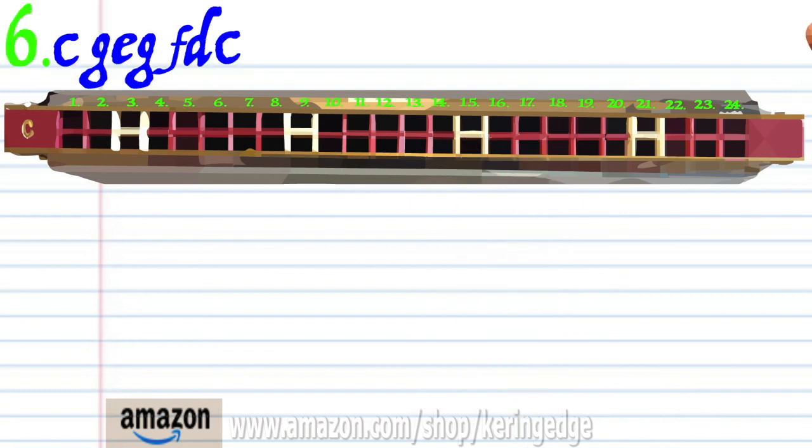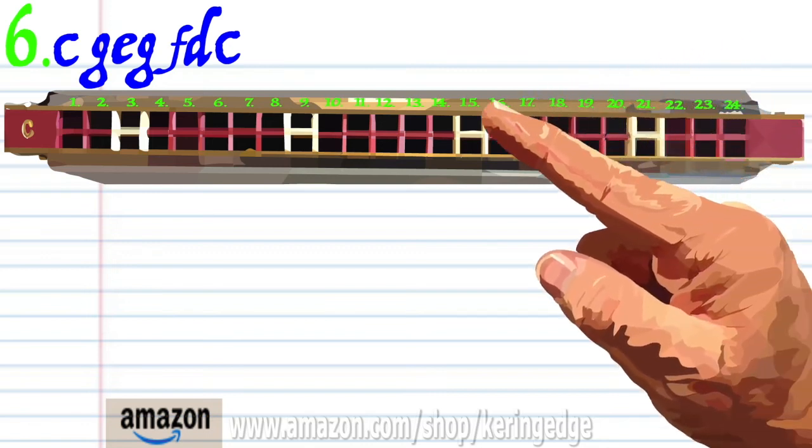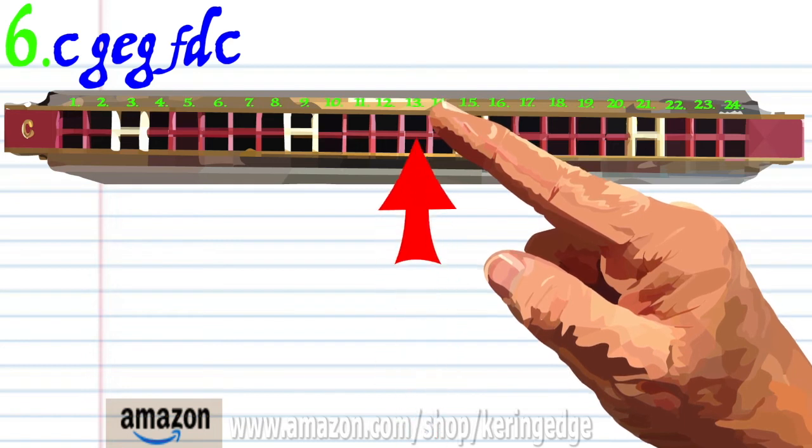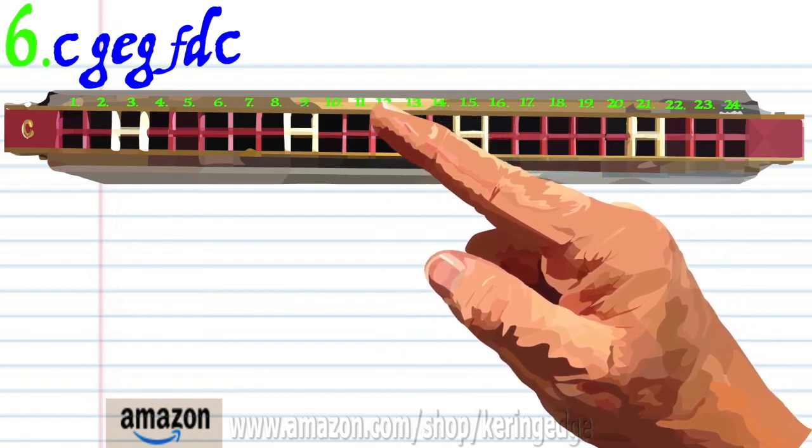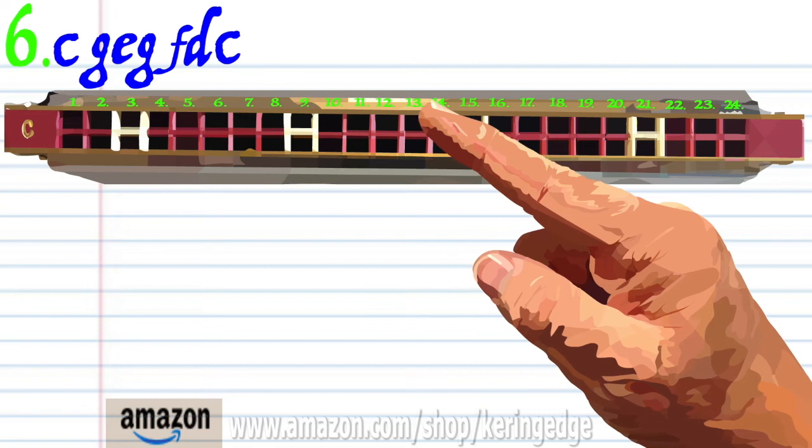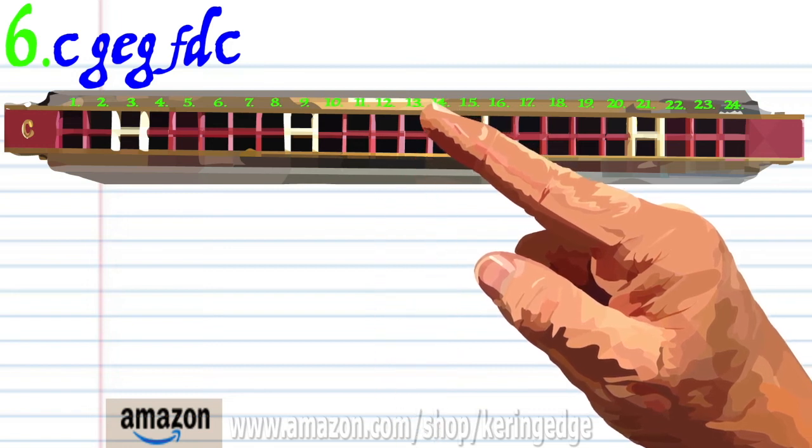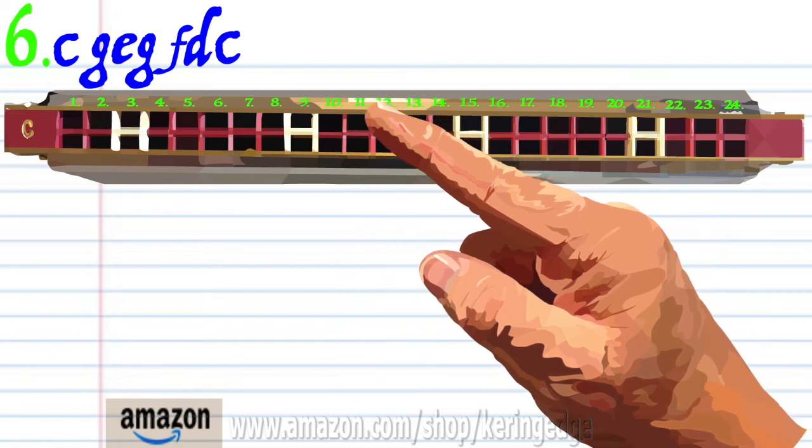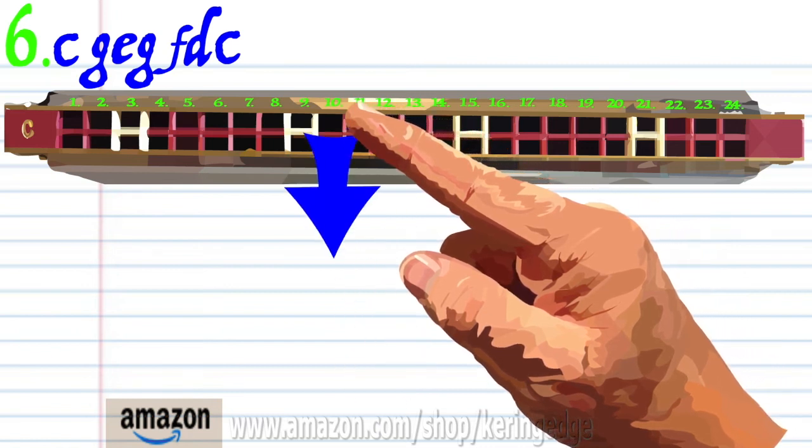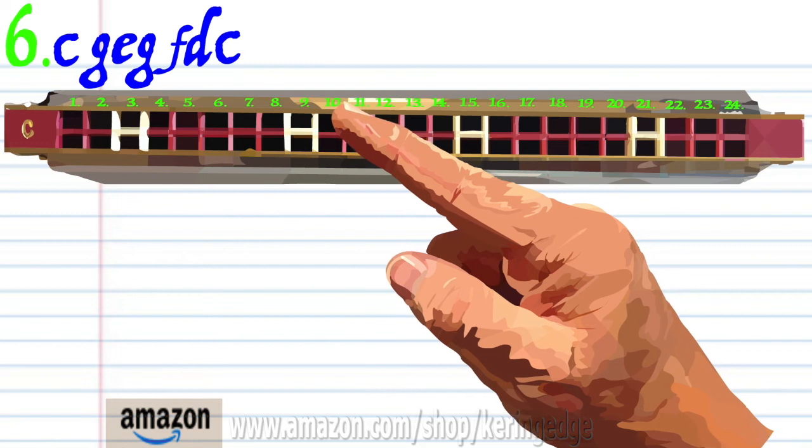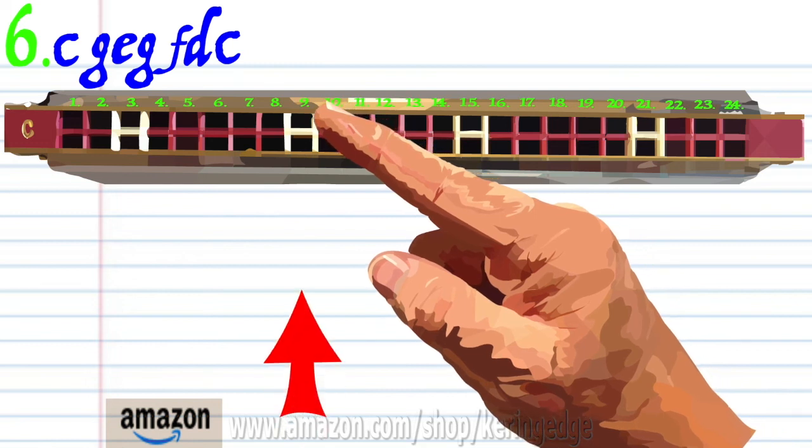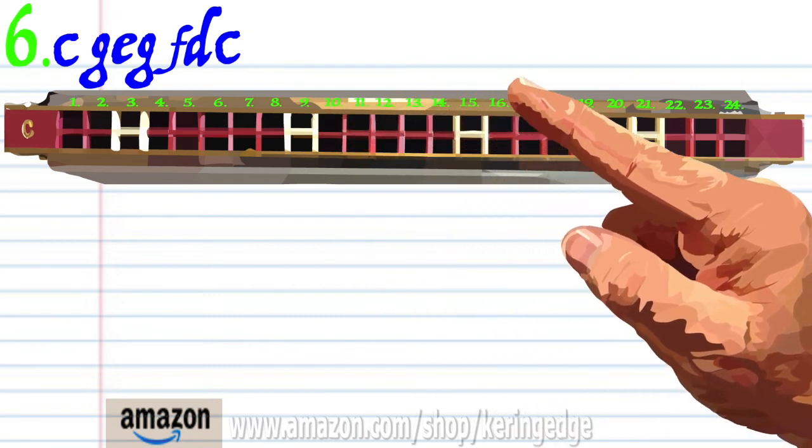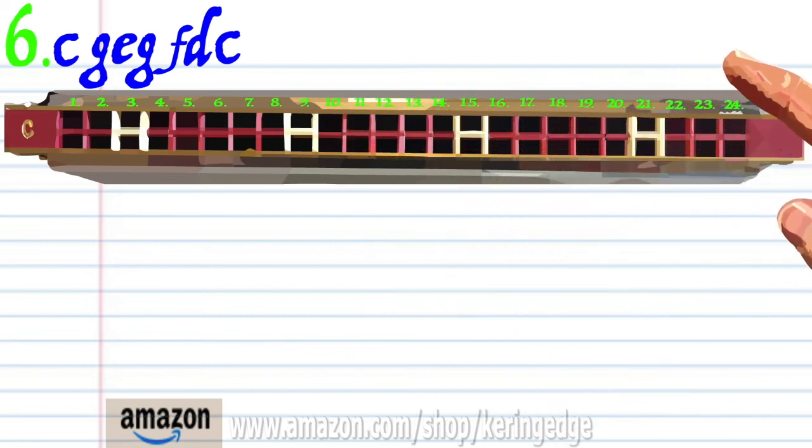For phrase six, blow into fifteen, blow into thirteen, blow into eleven, blow into thirteen, breathe in through twelve, breathe in through ten, and blow into nine. And practice this until you end up with something that sounds like this.